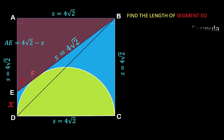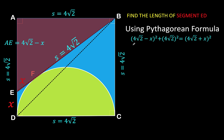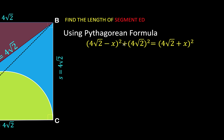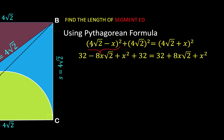Squaring the first leg (4√2 − X)² gives 32 − 8X√2 + X². The square of the second leg (4√2)² is 32. The square of the hypotenuse (4√2 + X)² gives 32 + 8X√2 + X². So our equation is: (32 − 8X√2 + X²) + 32 = 32 + 8X√2 + X².